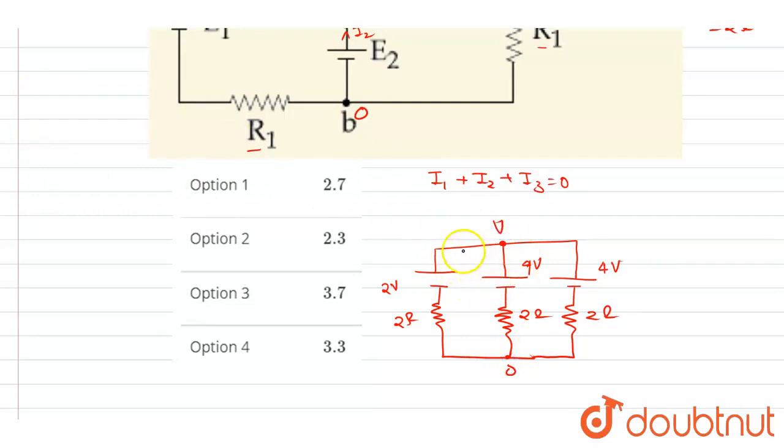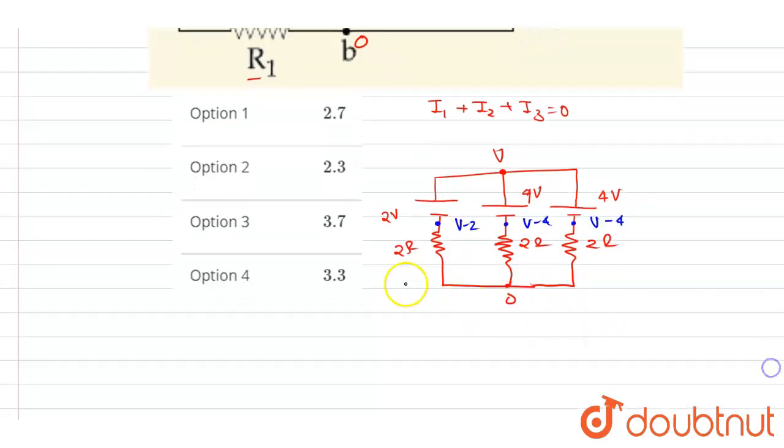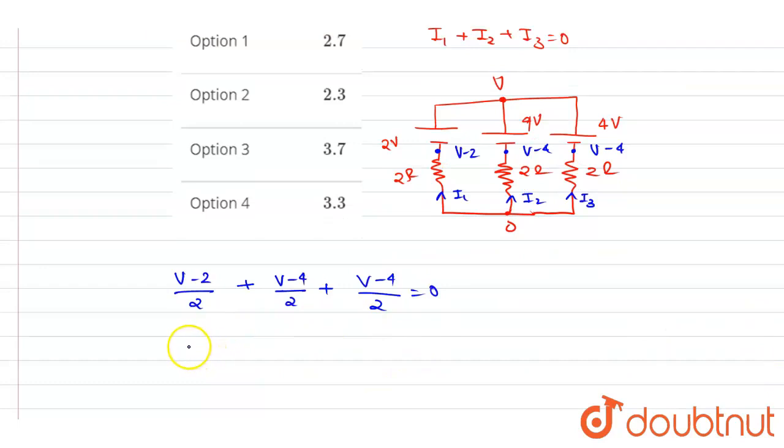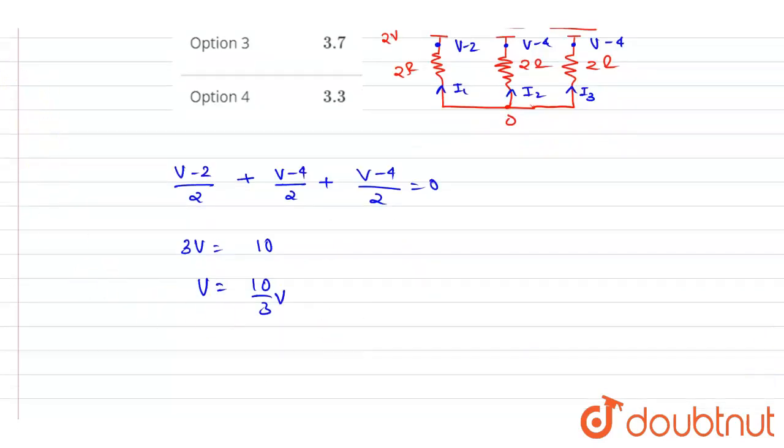Now you can just get the current in these three branches. If you see here, the potential will be V minus 2, here it is V minus 4, and here it is again V minus 4. So you can get the current in the three branches I1, I2, and I3. You can just put the value of I1, I2, and I3: it is (V-2)/2 plus (V-4)/2 plus (V-4)/2. From here you will get that 3V equals 10, so V equals 10 by 3 volt.